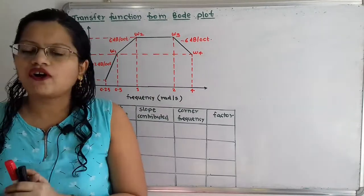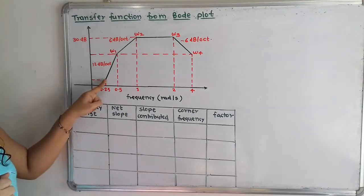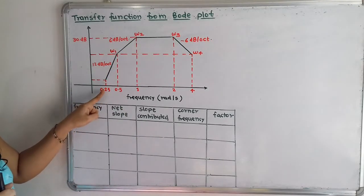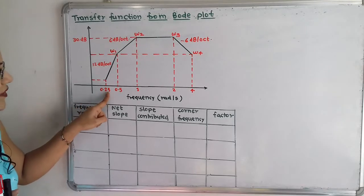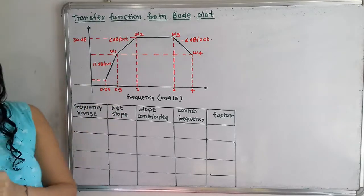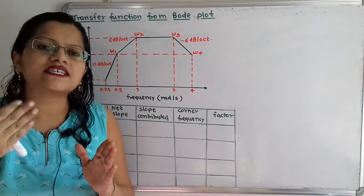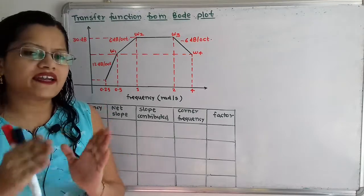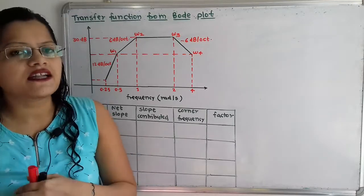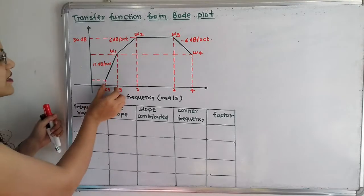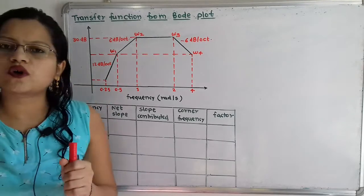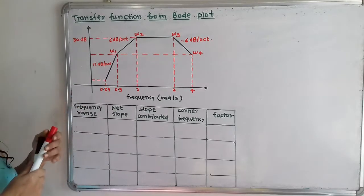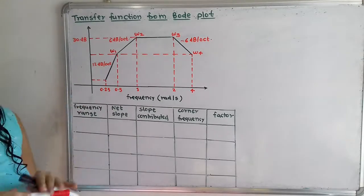Now if we observe the slope, here this slope is having frequency 0.25 up to 0.5. That means frequency is getting doubled. Whenever the frequency is getting doubled, the range within these two frequencies is known as an octave. So what is the slope given? The slope is 12 dB per octave.